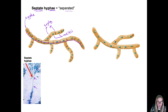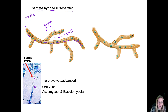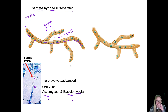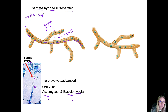You will see that in lab hopefully. This is a more advanced trait, found only in species in the phylum Ascomycota and the phylum Basidiomycota — only these two phyla will have species with septate hyphae.